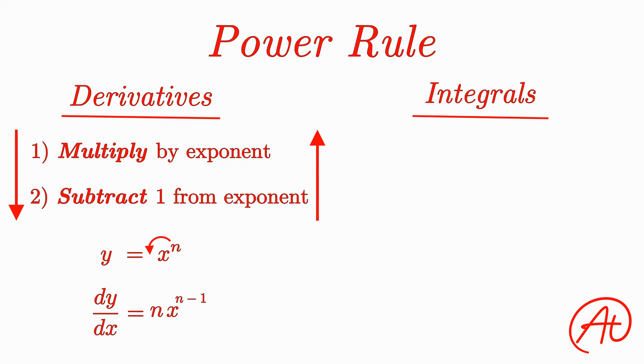So let's say we have the same function we had before, of x raised to some exponent n. Since the last step of the derivative was to subtract 1 from the exponent, we need to first add 1 back to the exponent.